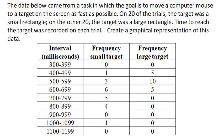Sometimes we need to compare two different groups of data. For example, this data comes from a task in which the goal is to move a computer mouse on the screen to a target as fast as possible. It was done twice with a small rectangle and a large rectangle, so two different targets. We've collected frequency data and created class intervals each of width 100 milliseconds. And so this is our data.